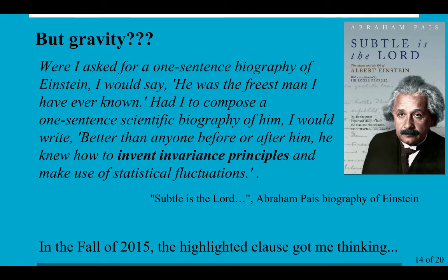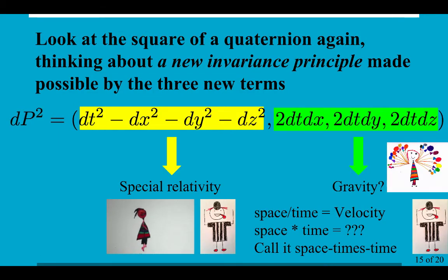Now, in the fall of 2015, that highlighted clause actually got me thinking about something I'd thought about for years. And that is to look at the square of a Quaternion again, thinking about a new invariance principle made possible by the new terms. So, the first term, that leads right to special relativity. But what could the other three be? Could they be gravity?